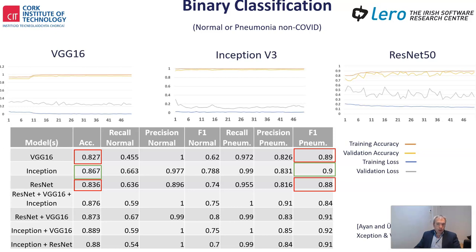With regard to the ensemble models, the highest accuracy was a combination of VGG16 and Inception at approximately 88.9%, followed by the ensemble combining Inception and ResNet at 88%. The results for the ensemble in binary classification are not surprising, given that Inception was the best performing single model.